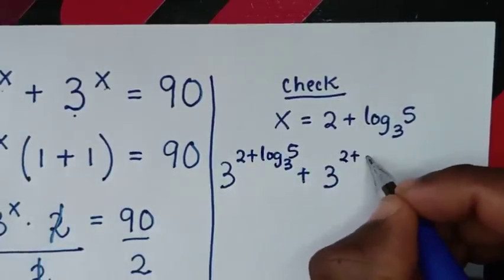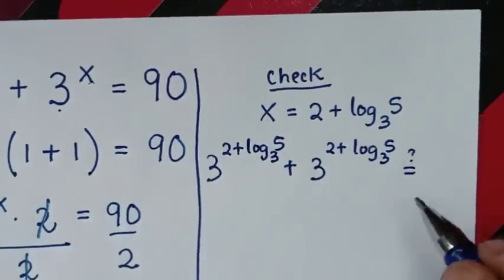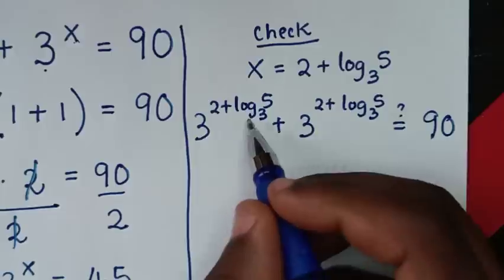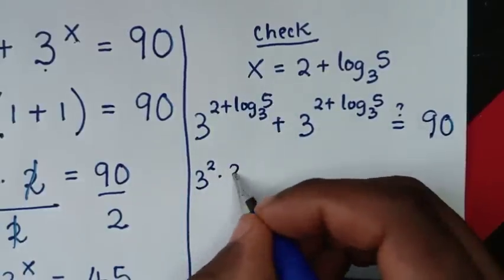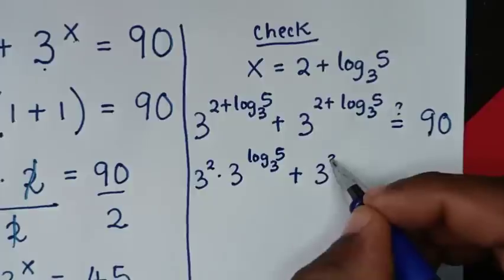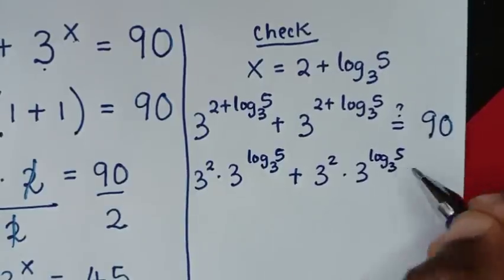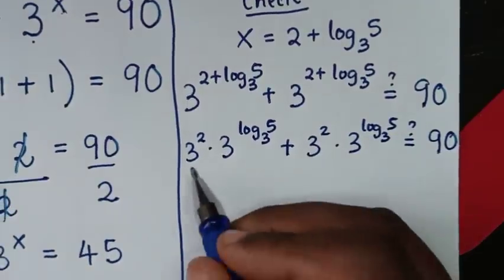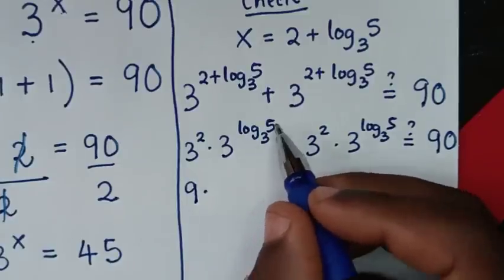We substitute x as 2 plus log of 5 base 3, and check if it equals 90. So 3 power of 2 plus log of 5 base 3 is the same as 3 power of 2 times 3 power of log of 5 base 3. Then 3 squared is 9, times 3 power of log of 5 base 3.